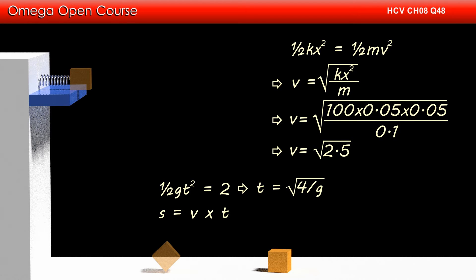Now, the horizontal distance traveled by the block is equal to its horizontal speed into time it takes to fall down, that is root under 2.5 into root under 4 by g, which is equal to root under 10 by g.